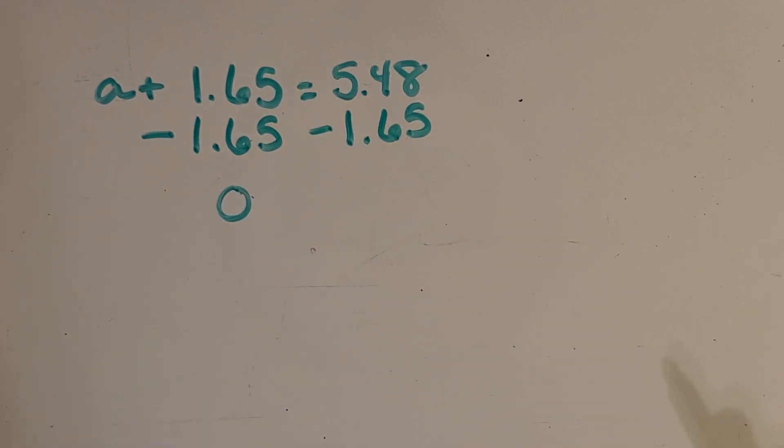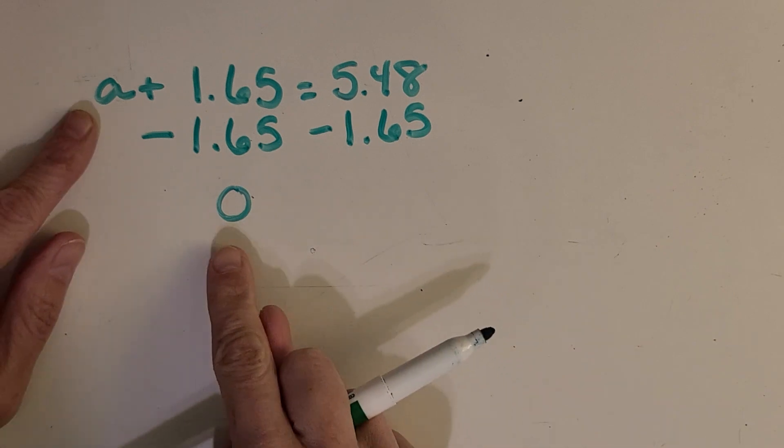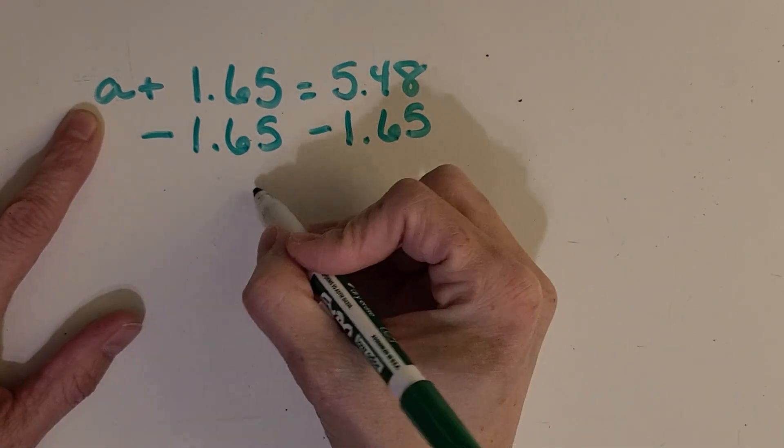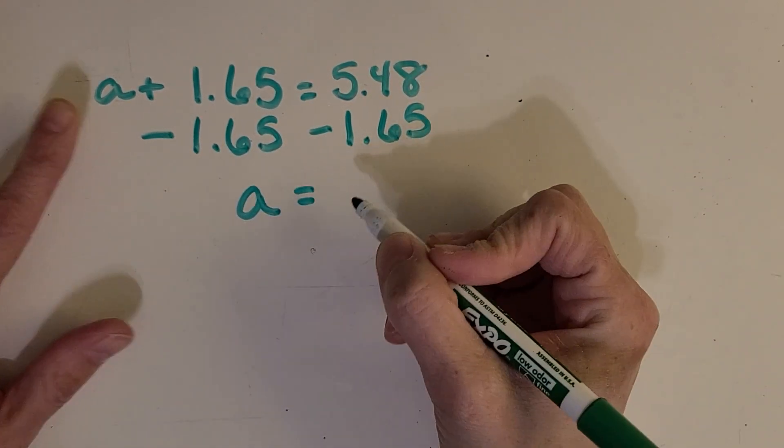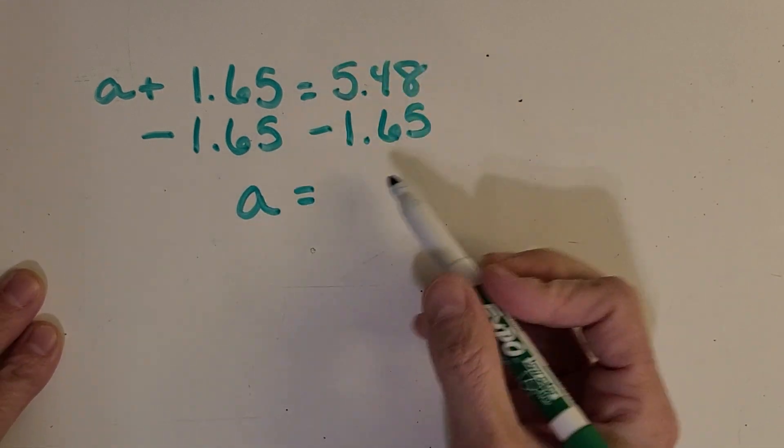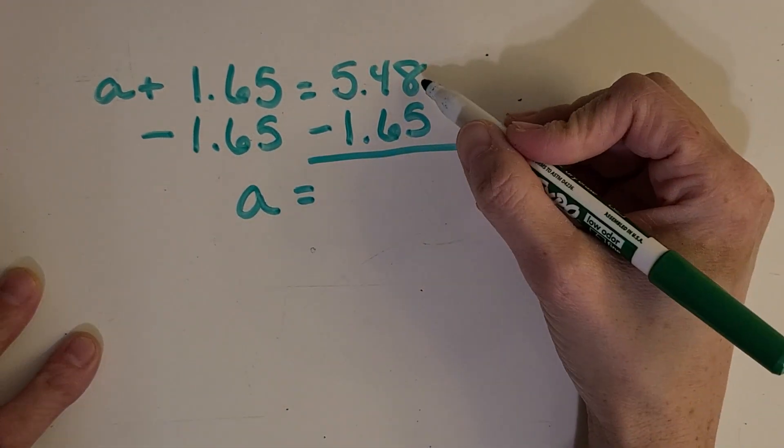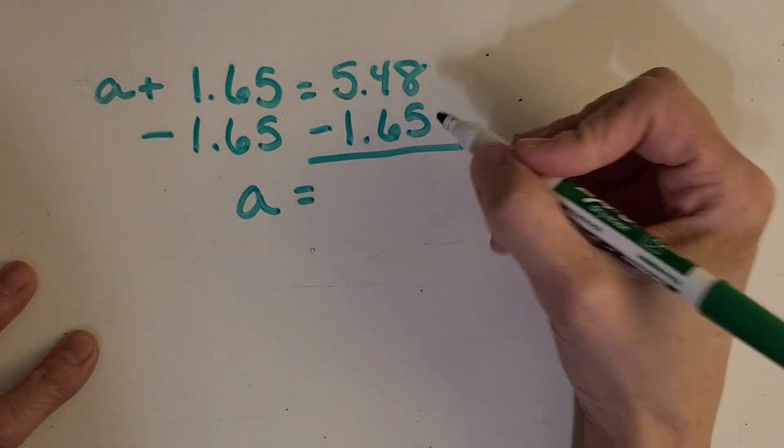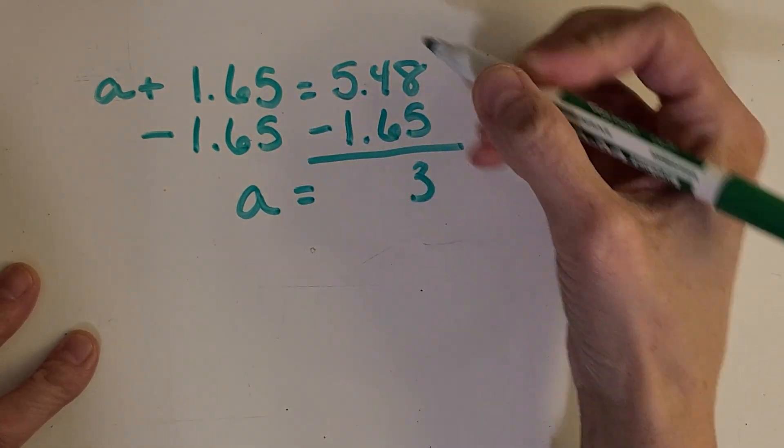And if I have 0 left, I might as well not mention it over here. I might as well just put A equals and then figure out this side over here. So now I can just do a simple algorithm to figure this side out.